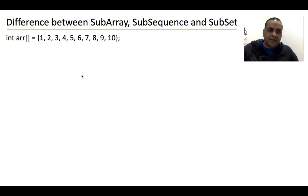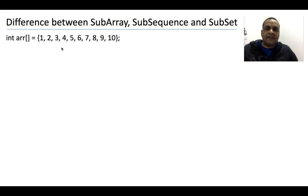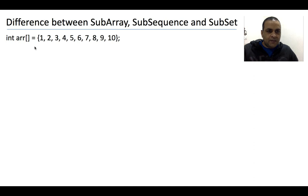If a collection has elements which are not present in the original collection, then that collection is neither subarray, nor subset, nor subsequence. So if I have an array that has, let's say, 17, that array is not a subarray, not a subsequence, and not a subset of this array. It should be clear that when we say a particular array is a subarray, subsequence, or subset of another array, all the elements in that array must be part of the original array. So let's discuss subarray, subsequence, and subset one by one.